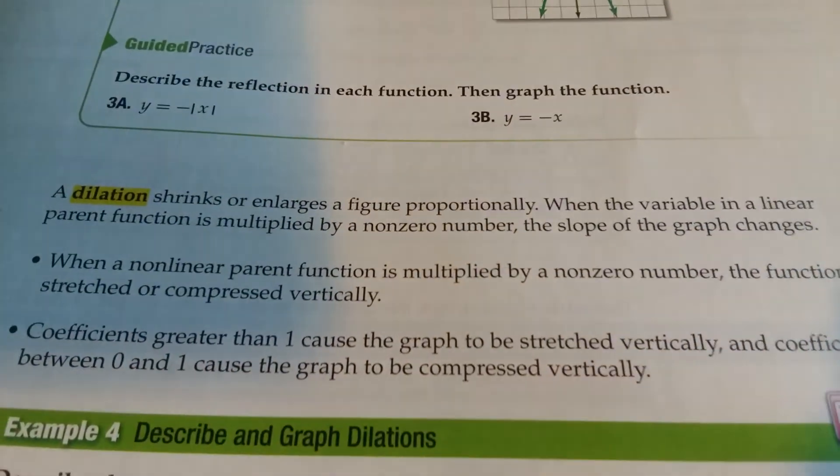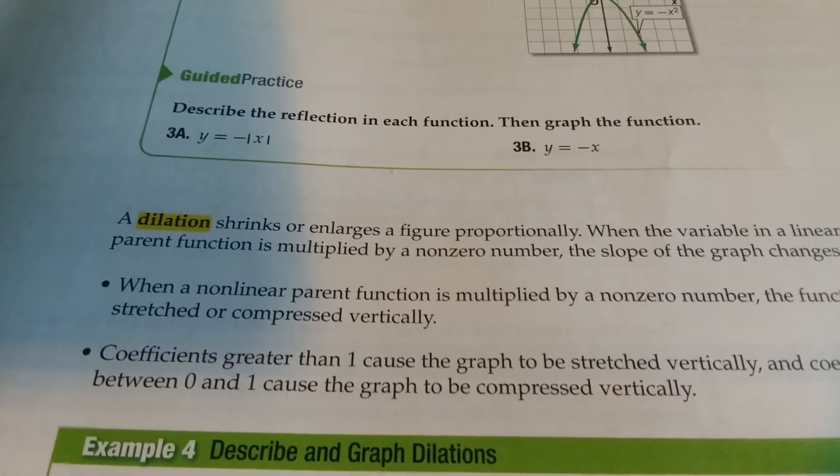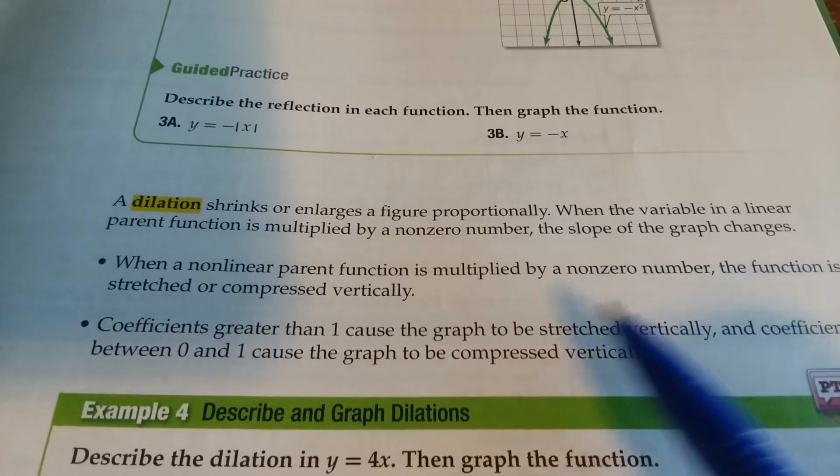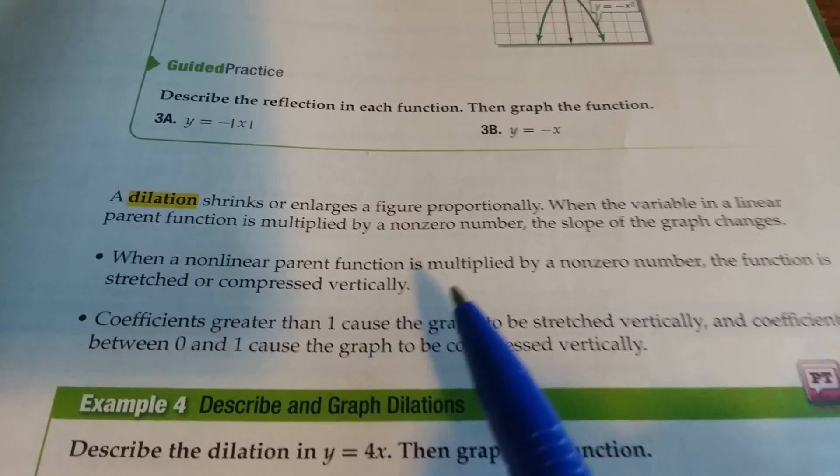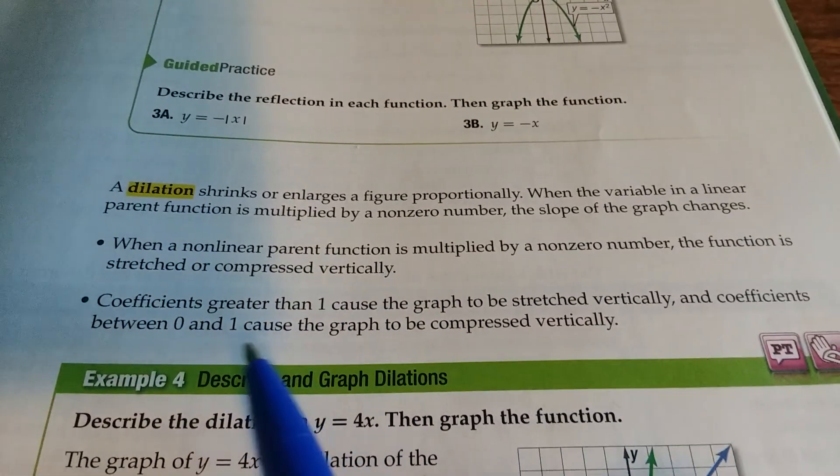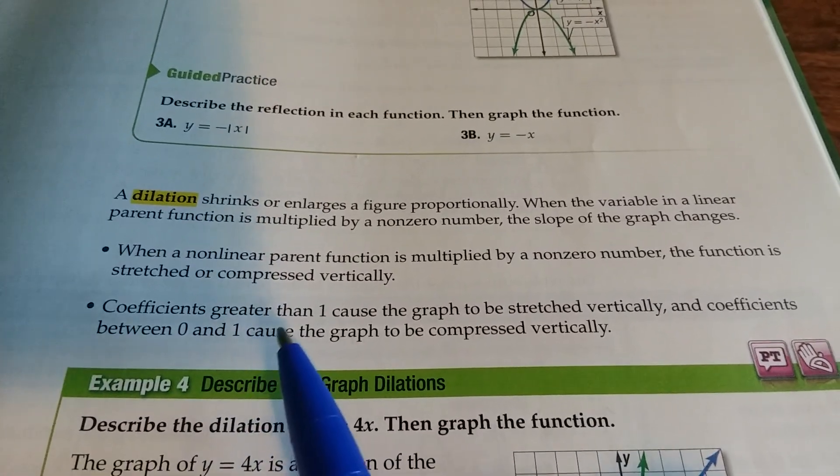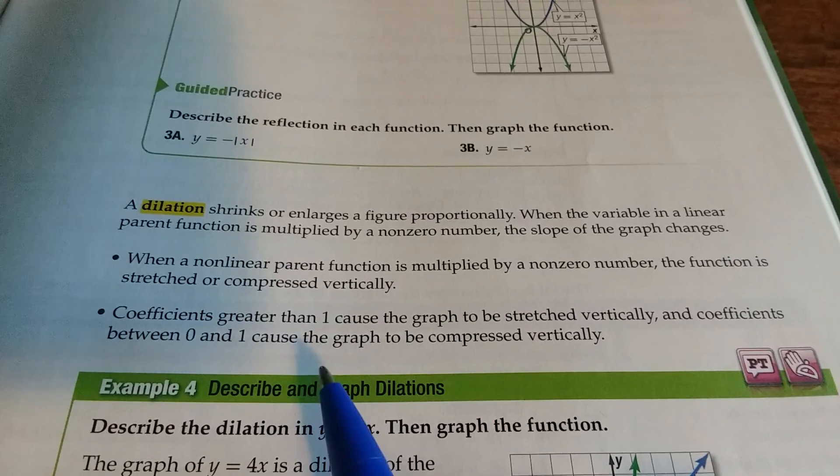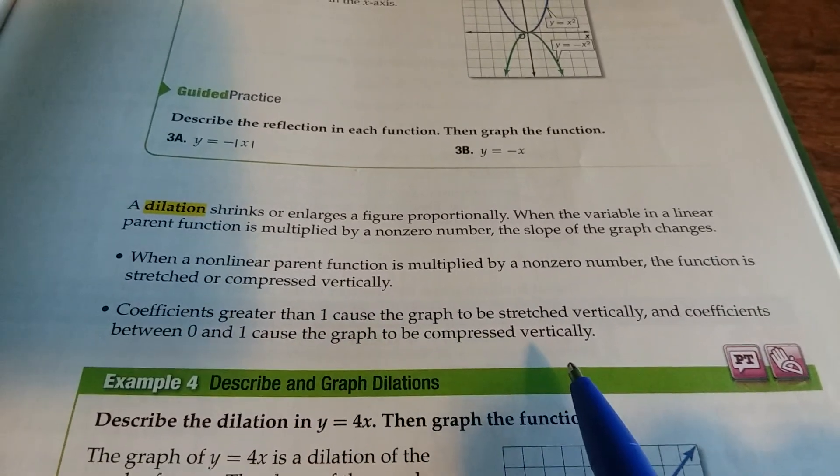When the variable in a linear parent function is multiplied by a non-zero number, the slope of the graph changes. When a non-linear parent function is multiplied by a non-zero number, the function is stretched or compressed vertically. Coefficients greater than 1 cause the graph to be stretched vertically and coefficients between 0 and 1 cause the graph to be compressed vertically.